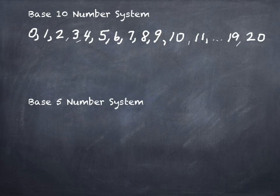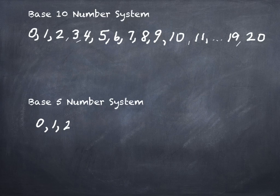How many numerals does base 5 have? Five. Whatever the name of the base system is, that's how many numerals it has, and it always starts with zero. So if I start with zero, how far up can I go? Four. There is no five in base 5 — only up to four. I've listed all five numerals and I've run out.